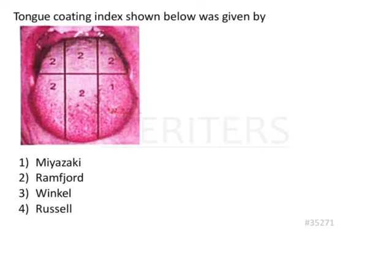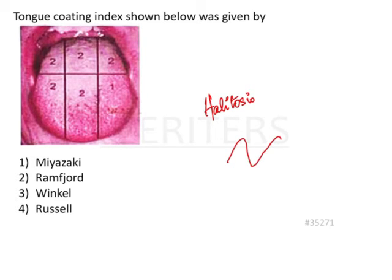The question here is about the tongue coating index shown below. The tongue is the most important source of halitosis in the oral cavity because there is easy deposition of debris as well as plaque on the tongue. The papillae present on the tongue have elevations and depressions, so material accumulates very easily and is difficult to clean. If it stays for a longer period of time, it can lead to foul odor.